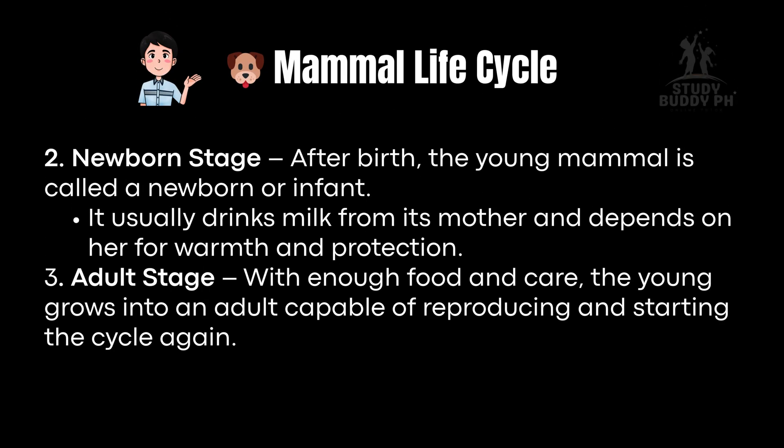Stage 2, Newborn: After birth, the young mammal is called a newborn or infant. It usually drinks milk from its mother and depends on her for warmth and protection. Stage 3, Adult: With enough food and care, the young grows into an adult capable of reproducing and starting the cycle again.